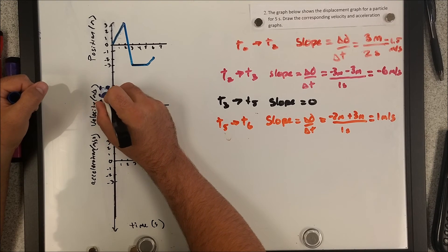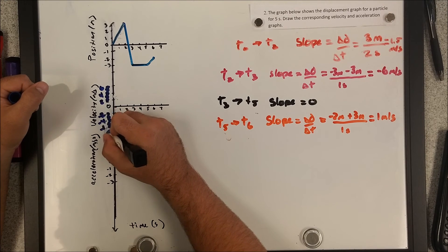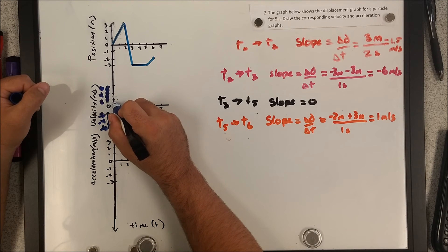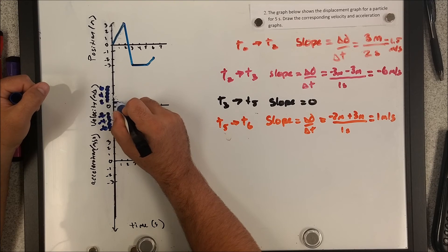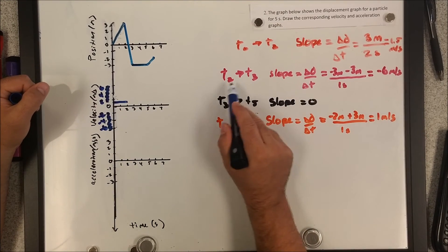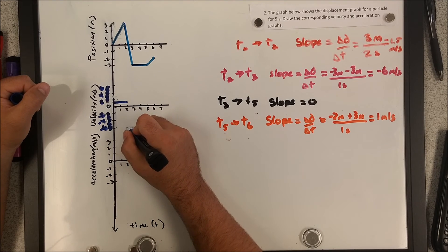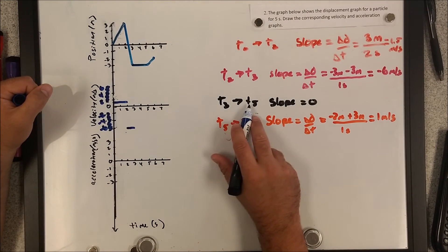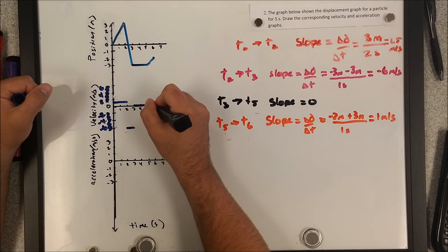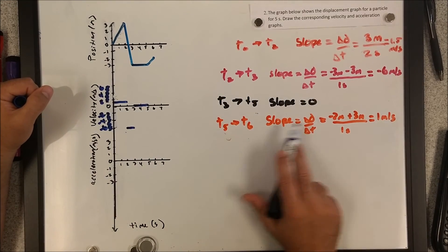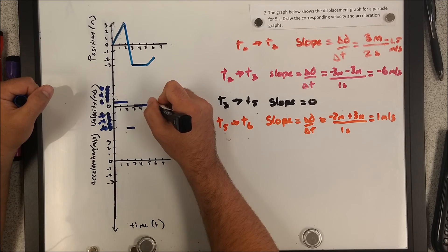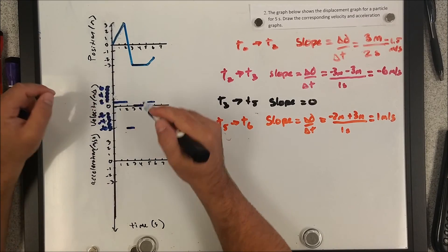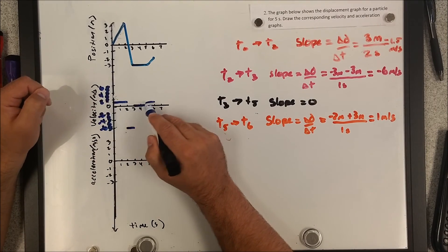So really, this first segment, 1.5, is right about here for two seconds. Then the negative 6 from 2 to 3 is way down here. So we have a gap, we have a break. And then from 3 to 5 seconds, we have zero slope. So we're going to do this. And then from 5 to 6 seconds, we have 1 meter per second. So that's about here. It's kind of ugly. If I were to have done this again, I'd expand this axis out a little bit more. So you can see that these are not all in the same space. I think it's still showing up okay.